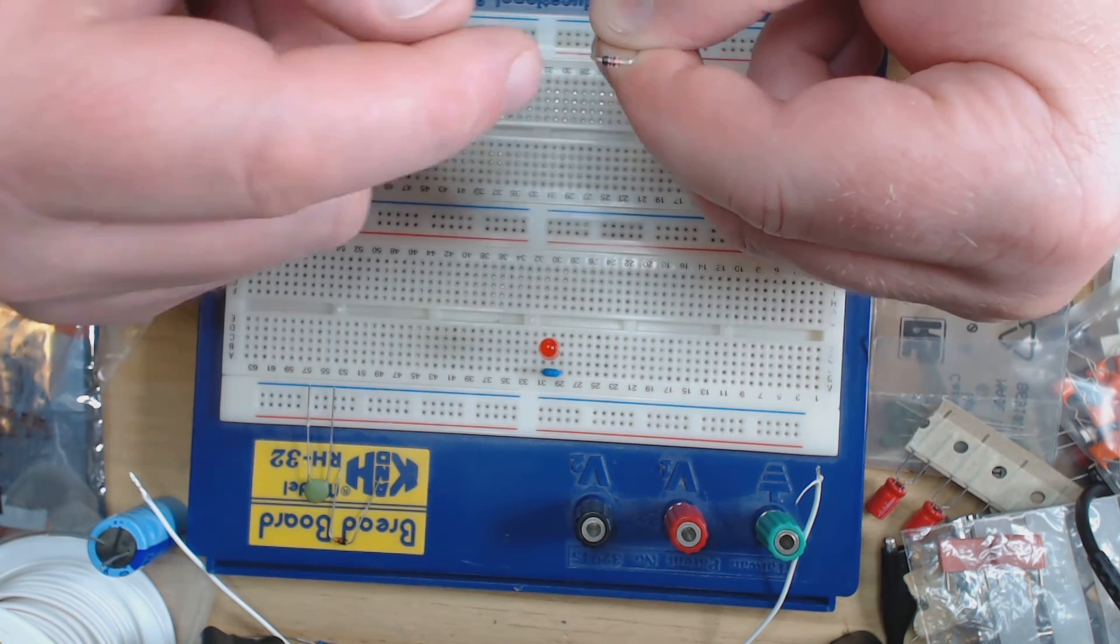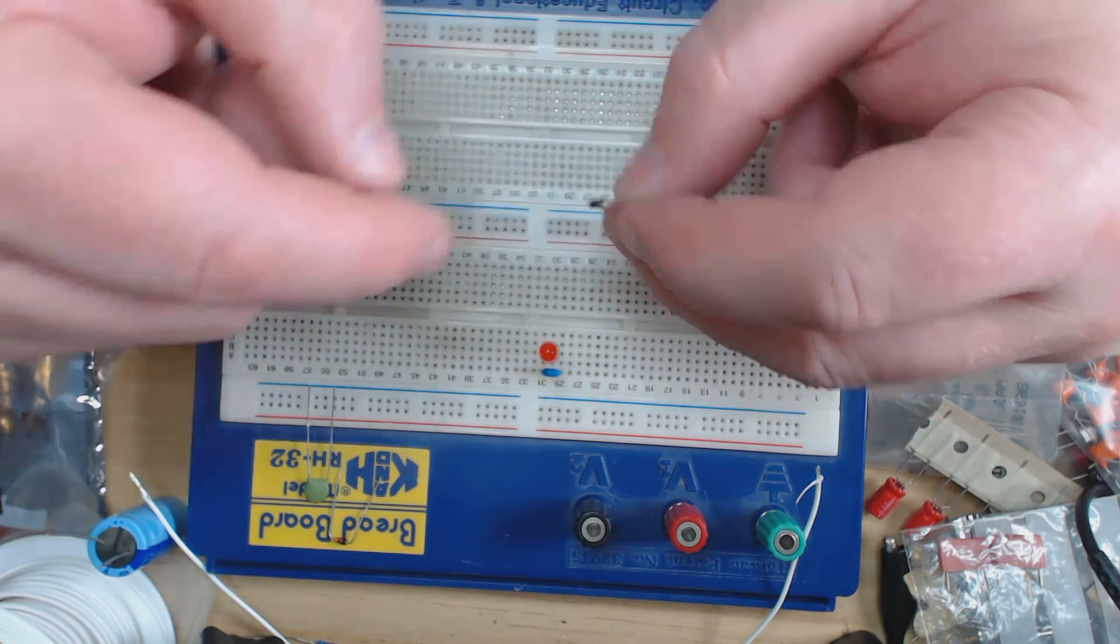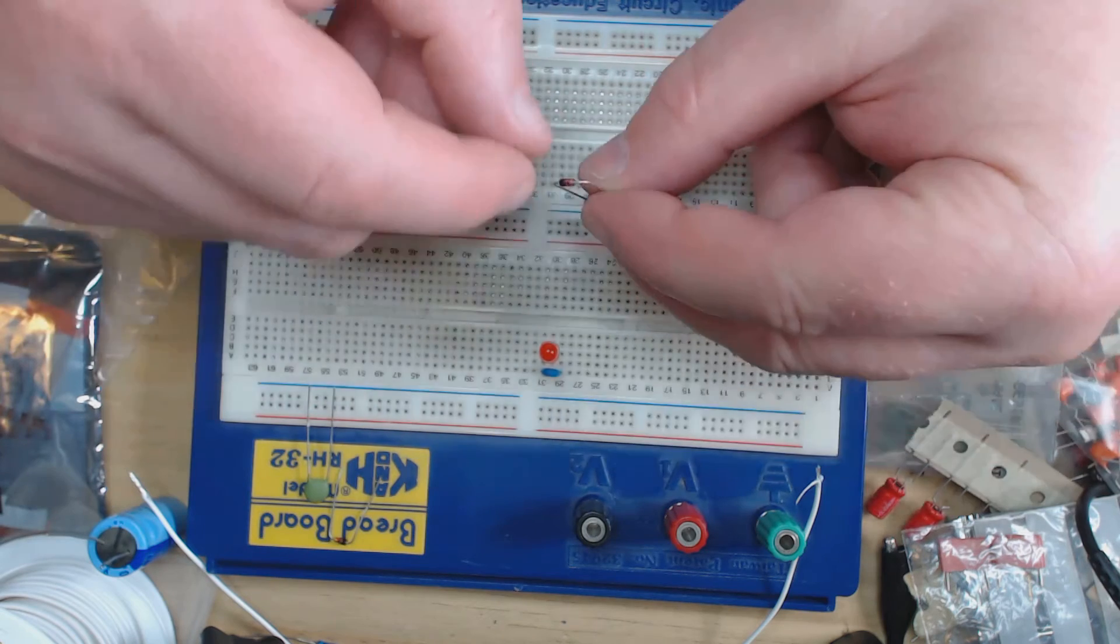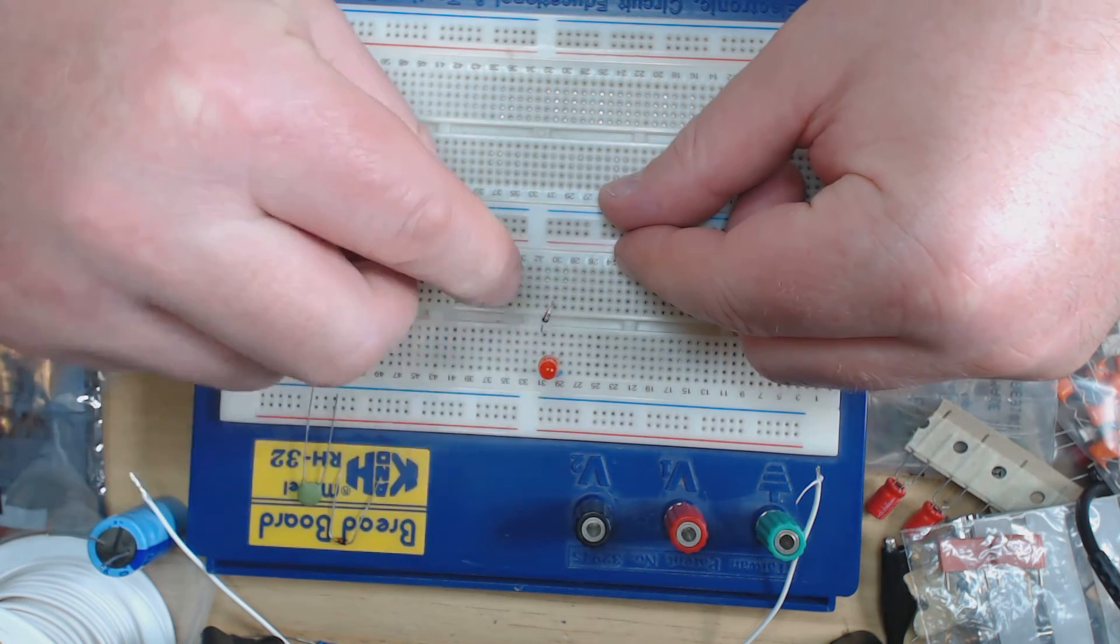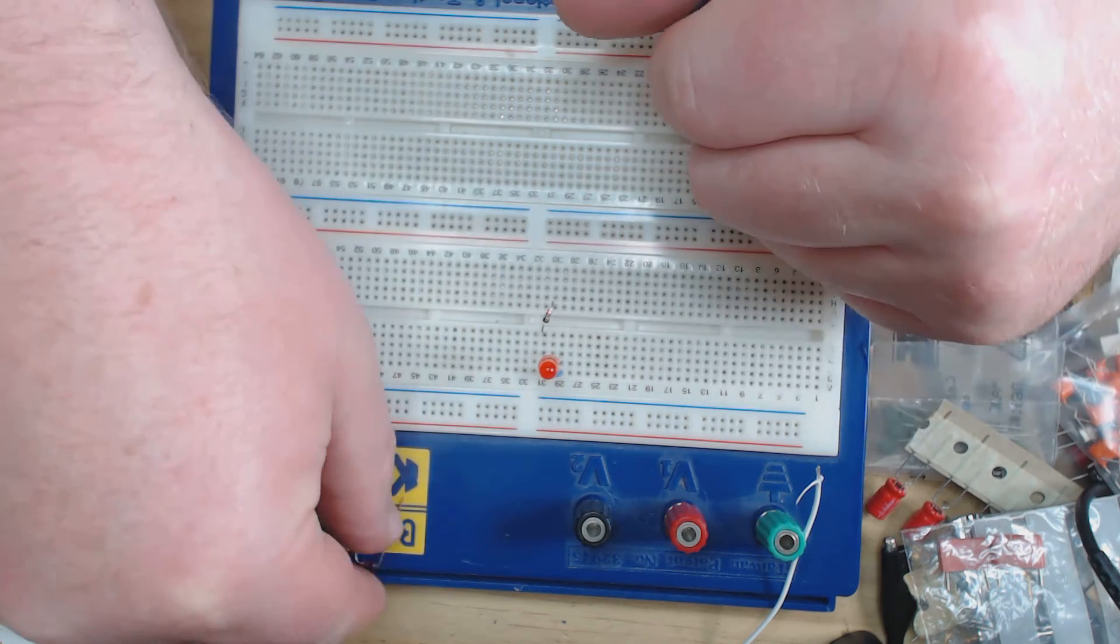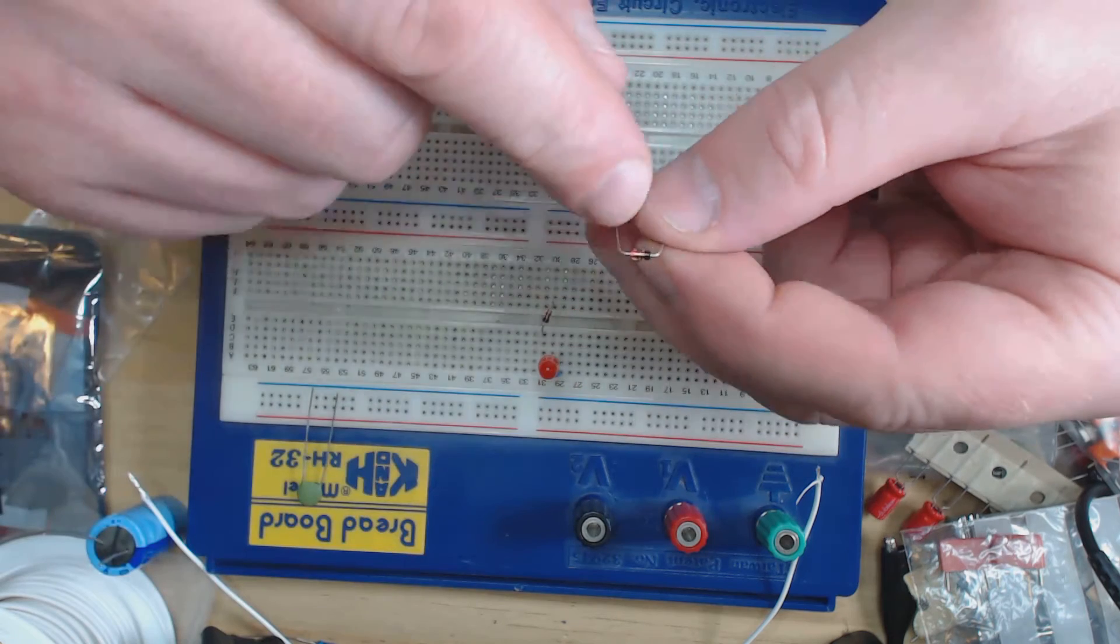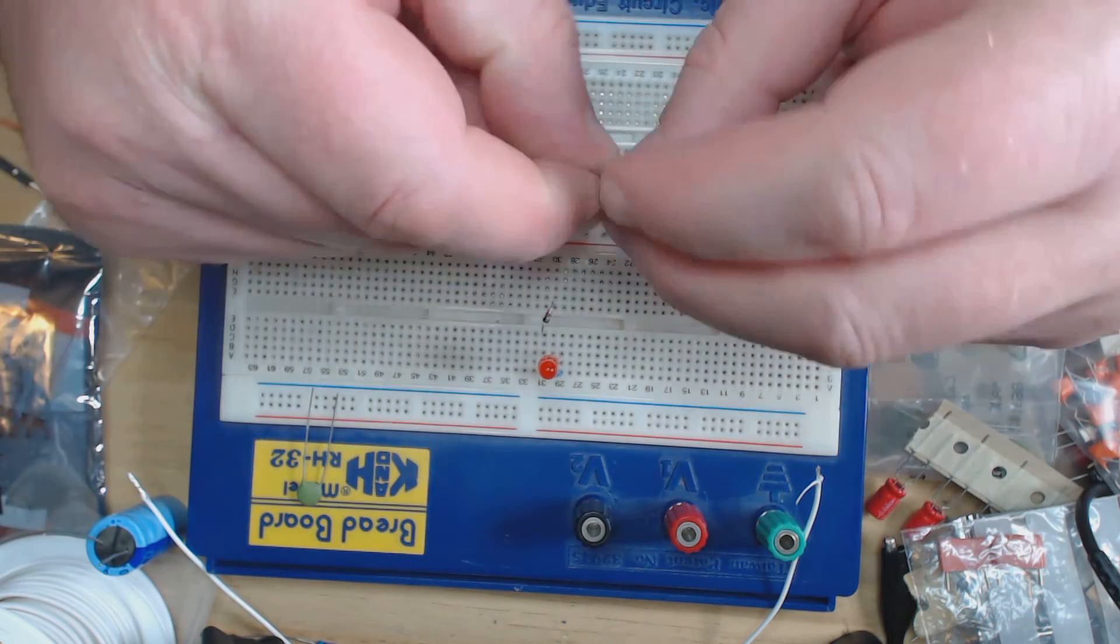So what we're going to do is we know that the current is actually flowing in this particular case in that direction and we need to complete the circuit. So we're going to take another diode, again noting the black line.